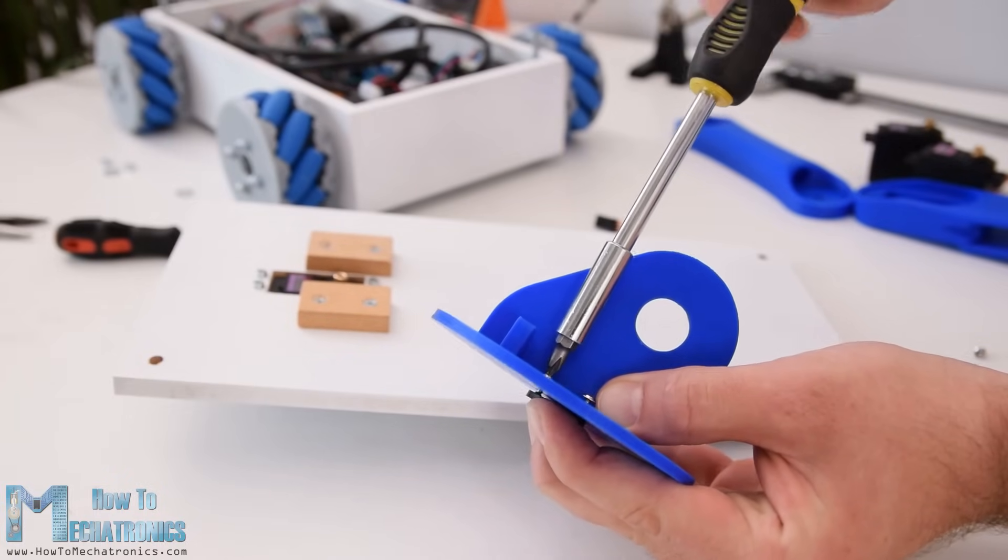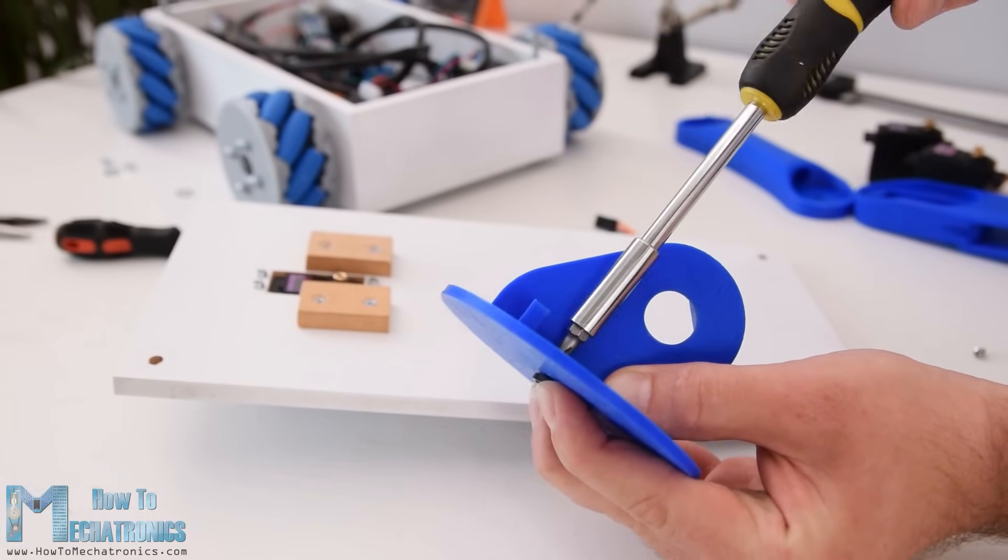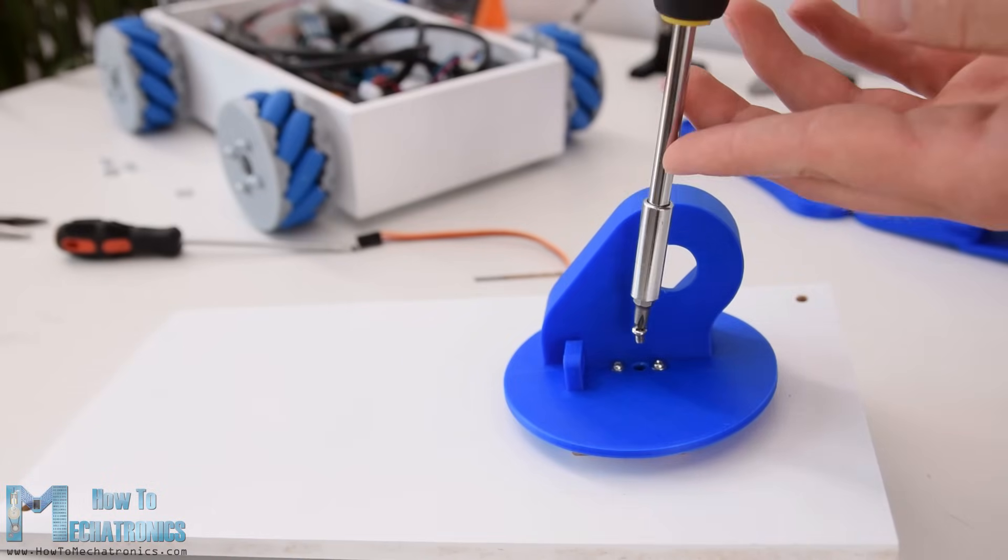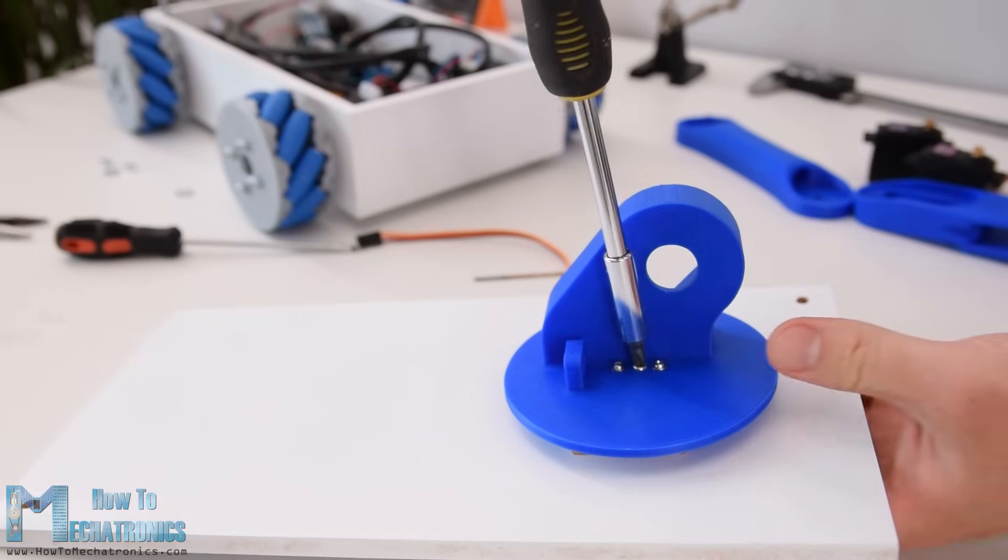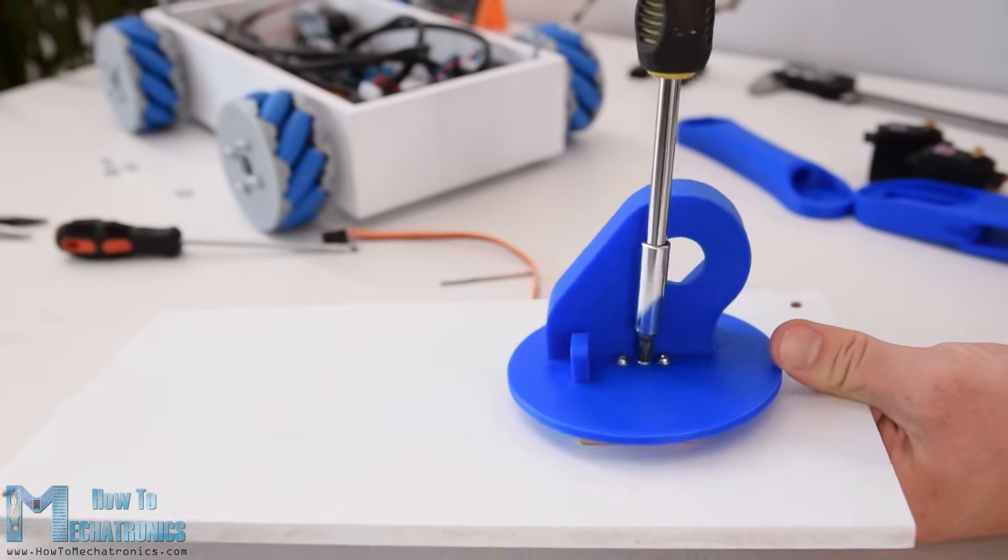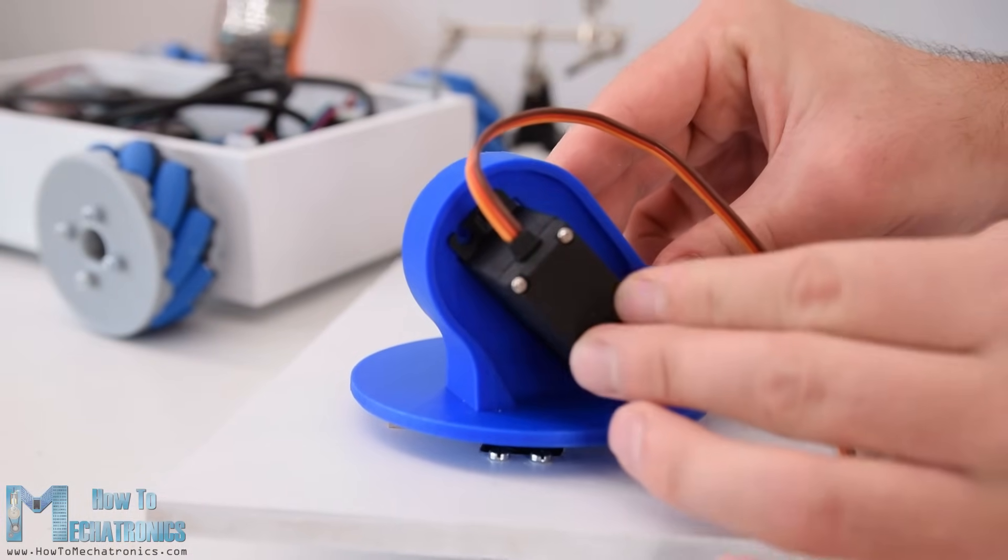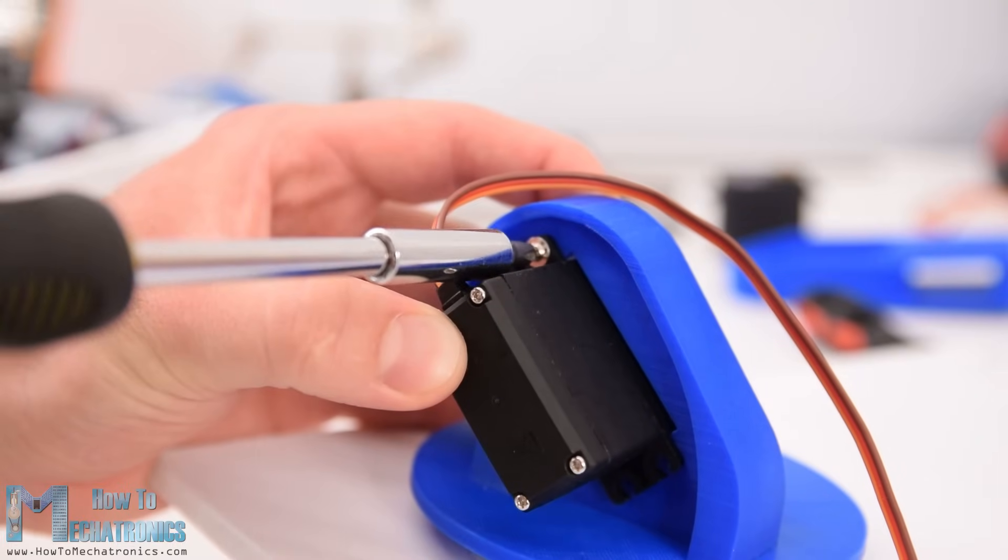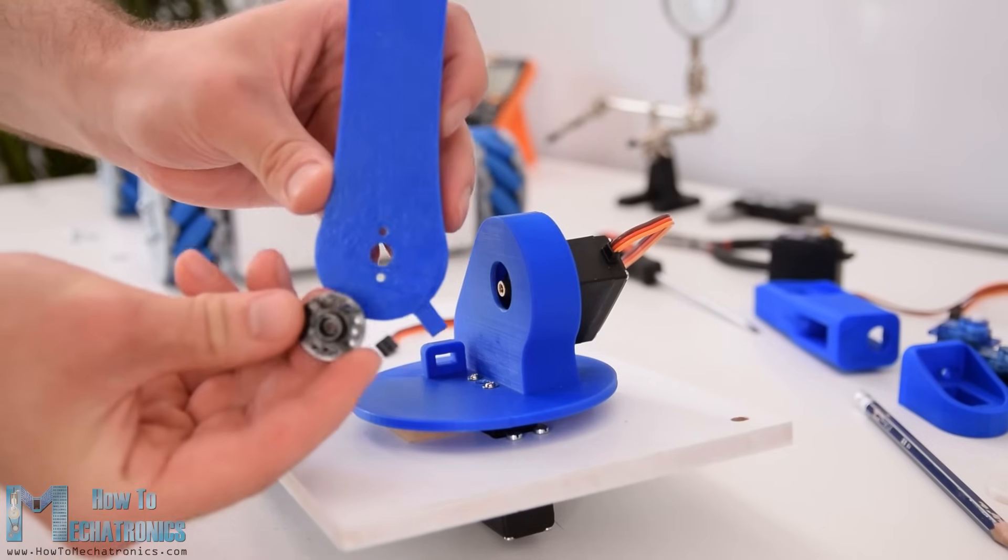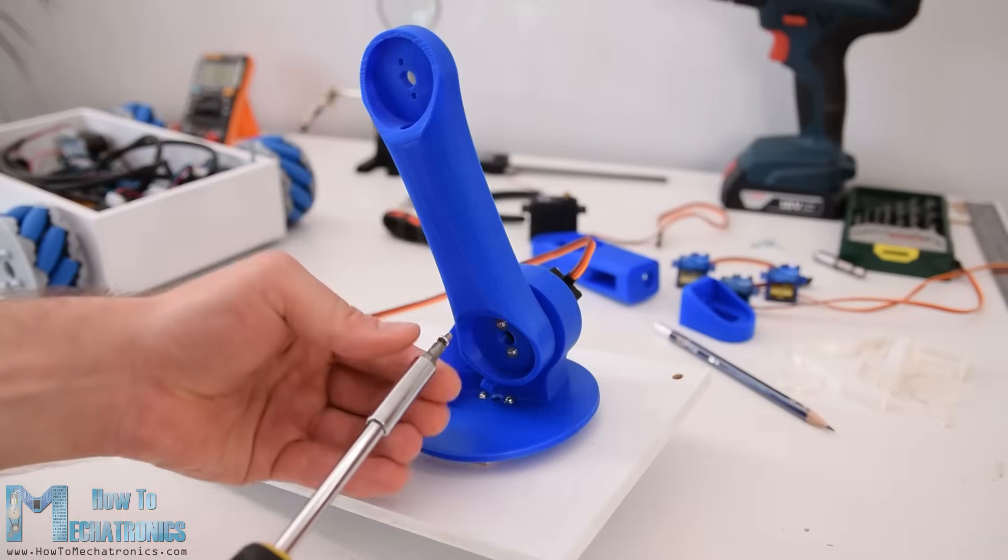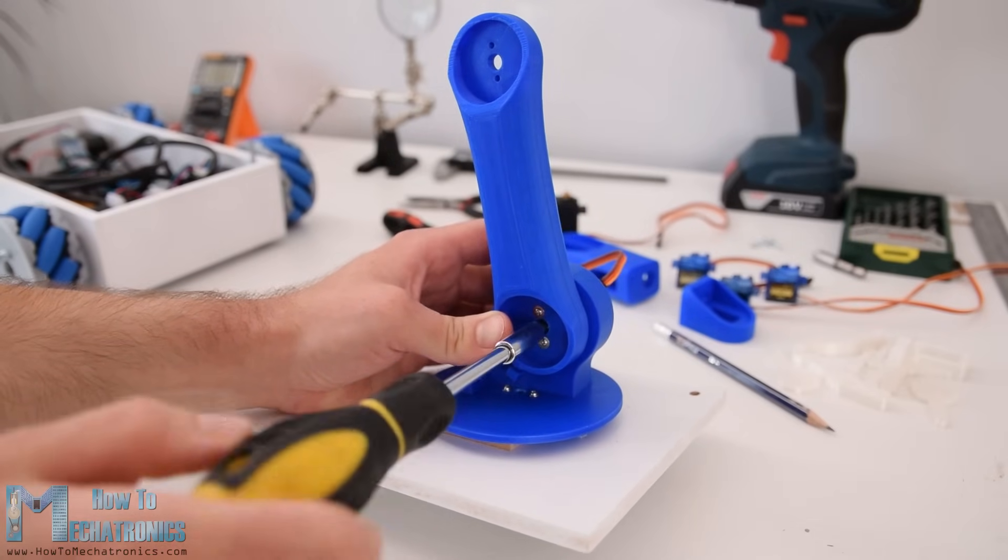The round horn is secured to the waist part using the self-tapping screws that come as accessories with the servo. And then the round horn is secured to the servo shaft using the appropriate bolts that also come with the servo. Next we have the shoulder servo. We simply put it in place and secured it to the 3D printed part using self-tapping screws.